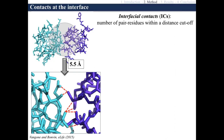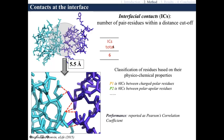The number of contacts at the interface is simply the number of residues that are within a certain distance threshold from each other. After optimization, we set this distance threshold at 5.5 Å and very simply count the number of contacts within this threshold. For example, in this little example here, we have six of those red contacts, so the total number of contacts in this case will be six.